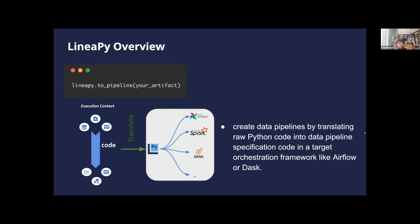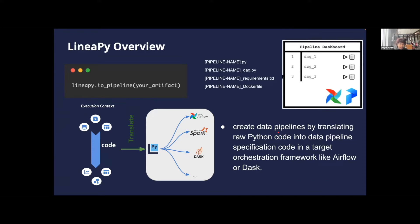Finally, you can call the to_pipeline API on linear artifacts to create data pipelines by translating raw Python code into data pipeline specification code in any target orchestration framework like Airflow. The files associated with the pipeline include not only the code for computing the artifact but also the Python dependencies and a Dockerfile to set up the container to run the pipeline with the right dependencies already installed. The pipeline files can then be sent to a workflow orchestration framework like Airflow or Prefect for productionization.